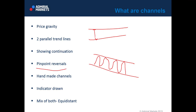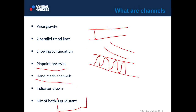Pinpoint reversals — that's handmade channels. Handmade channels are channels which you usually draw by your own hands, and that is what we have all been doing when we start trading. Usually new traders make trend lines at price tops and bottoms and refer to handmade channels. I use a combination of both: handmade and indicator-drawn, which is called equidistant channel.